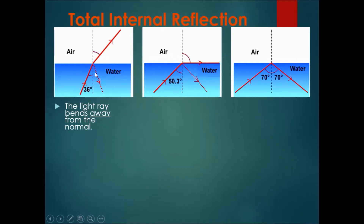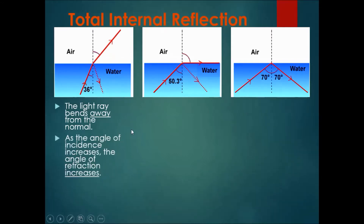If the angle in the water is 36 degrees over here, and the light ray still comes out into the air over here, the angle here will be bigger than 36 degrees. As the angle of incidence increases, the angle of refraction should also increase.